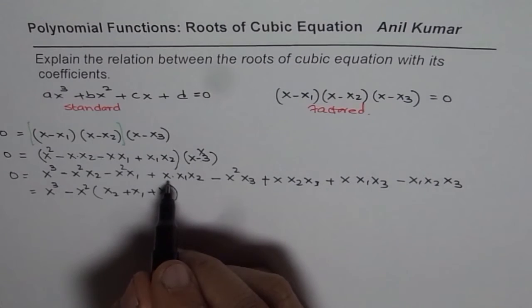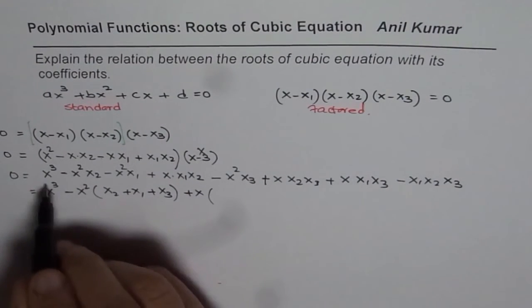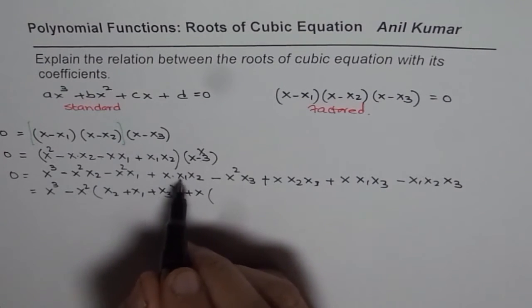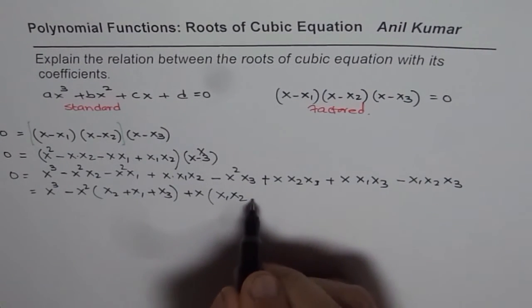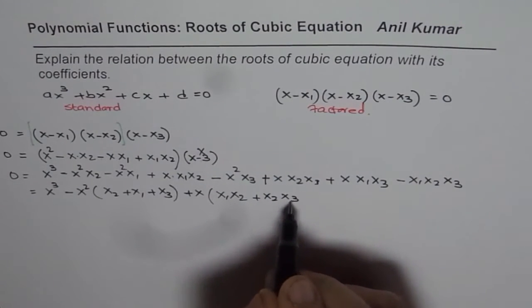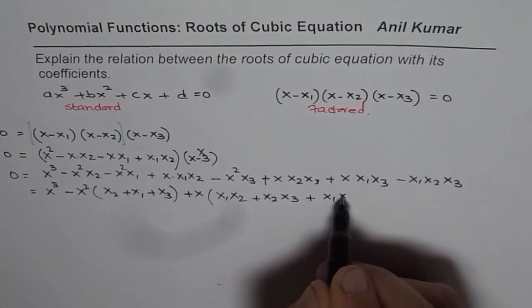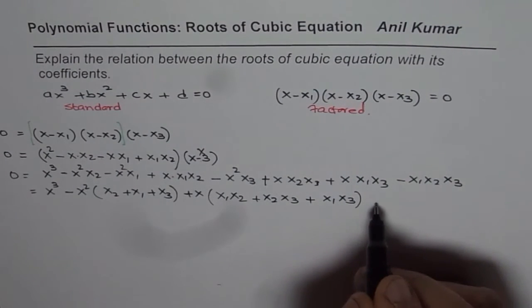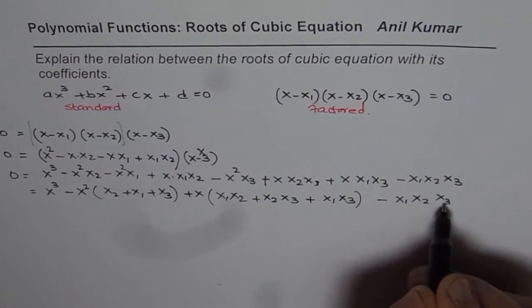Now let us see the coefficients for x. So it is plus x here so we will write plus x and then we have x₁x₂ and with x we have plus x₂x₃ and with x we have plus x₁x₃. And the last term here is -x₁x₂x₃.